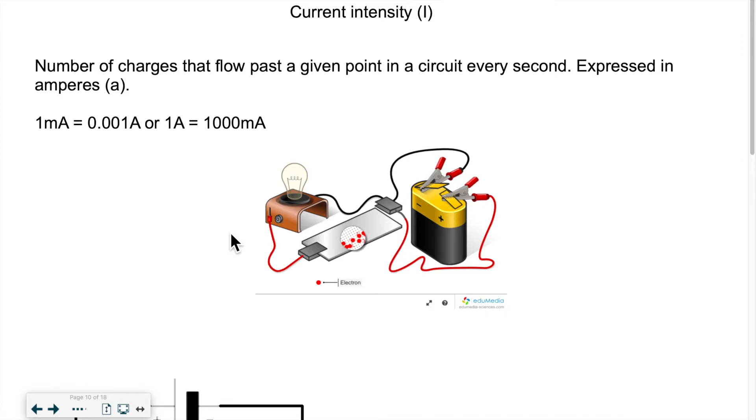The electrons are always the same ones circulating around the circuit. If we can measure them, we'll call that current intensity. Current intensity is expressed in amperes. We say amps normally. Amps is used to measure current intensity.